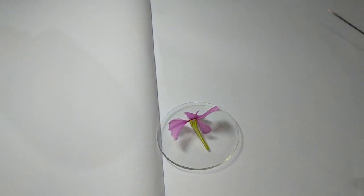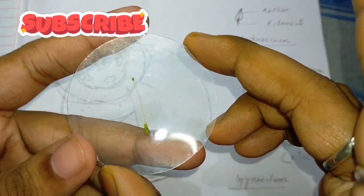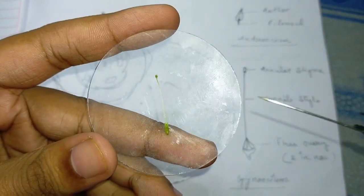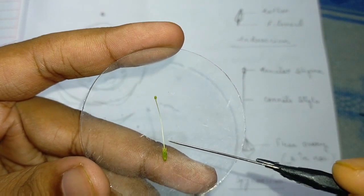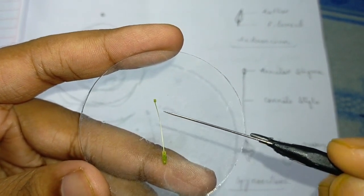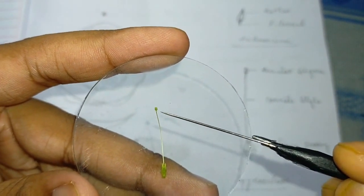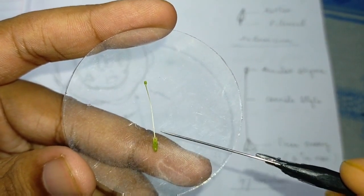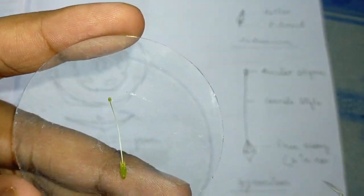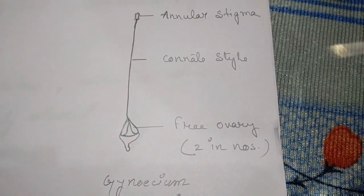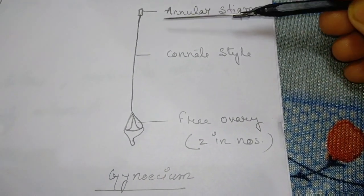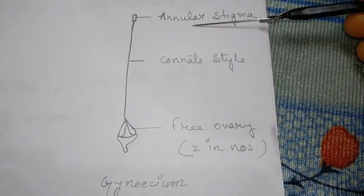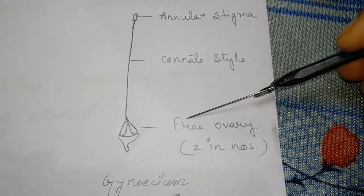Now I will show you the gynoecium in a diagram. This is the dissected part of the gynoecium. This is the stigma, this is the style, and this is the ovary part. This is the gynoecium part of the periwinkle flower. As you observe in the dissected part, this is the diagram showing the annular stigma, cornet style, and free ovary.